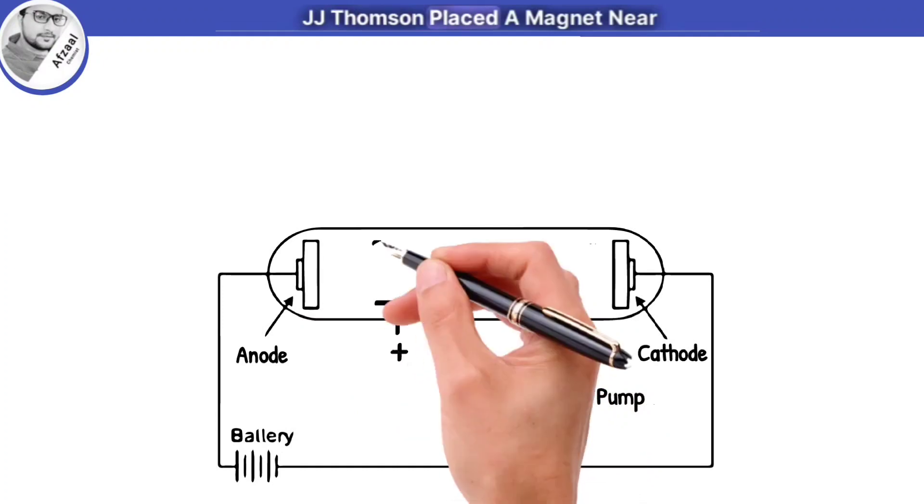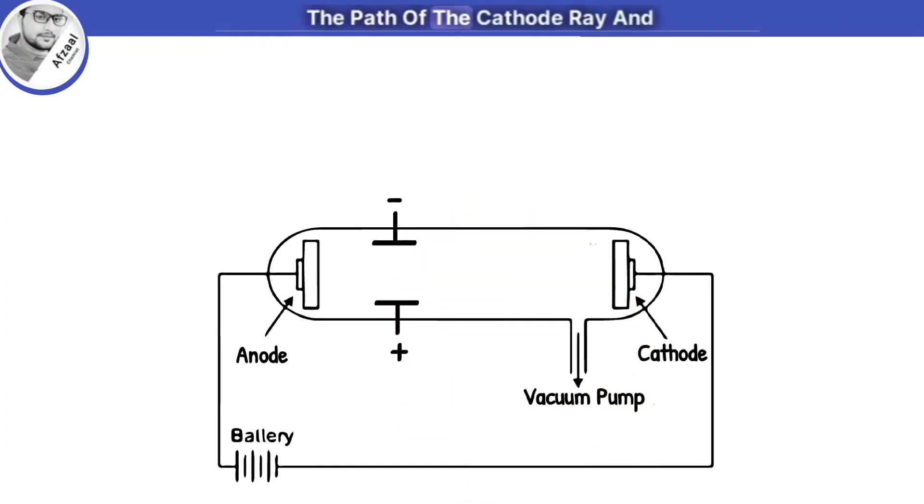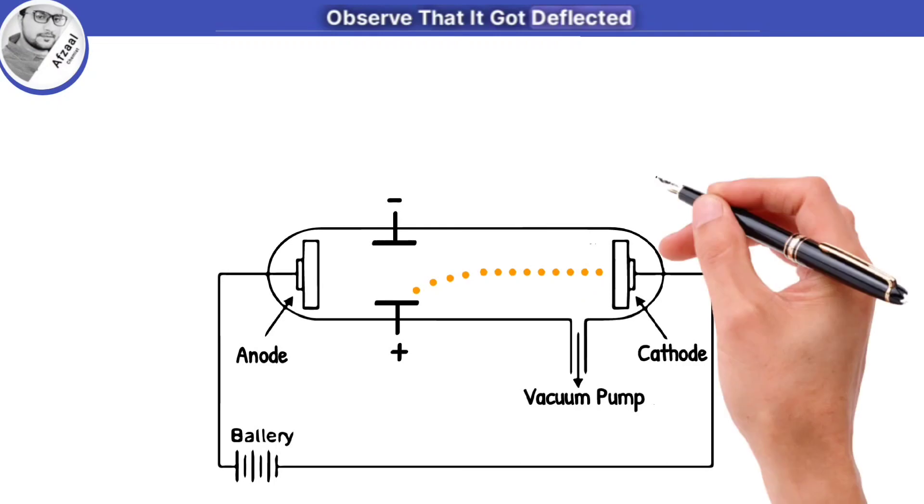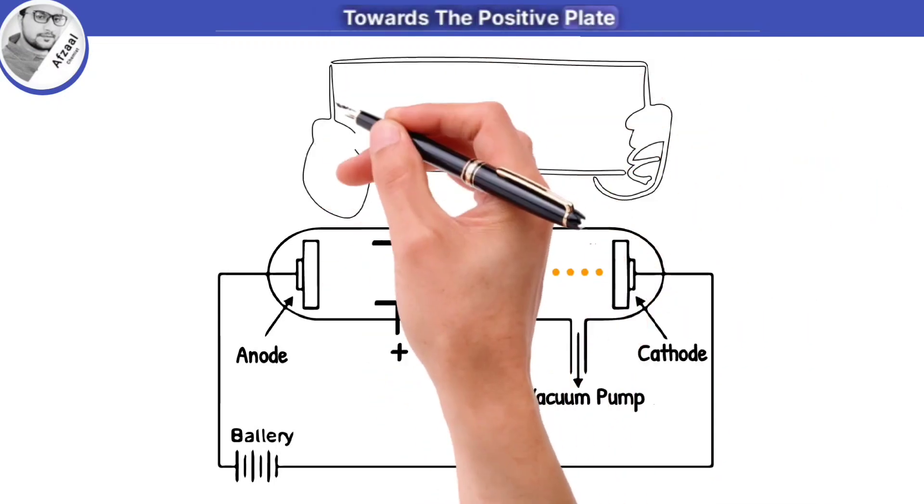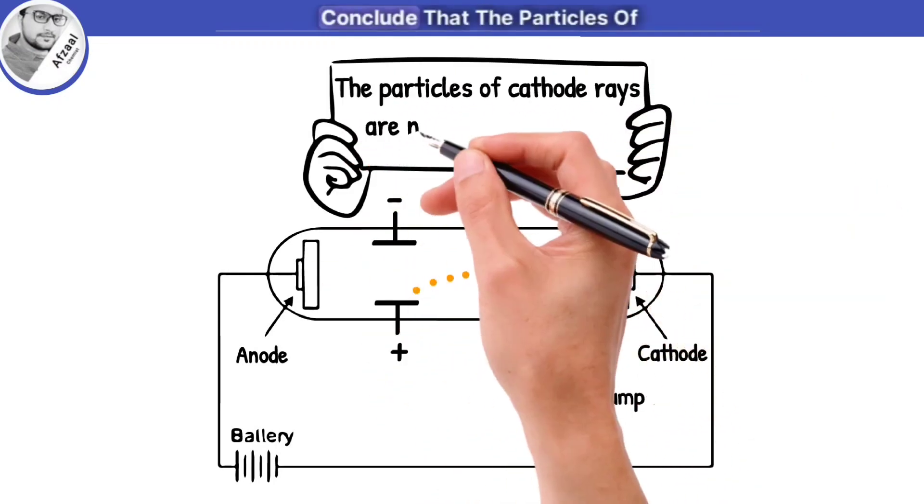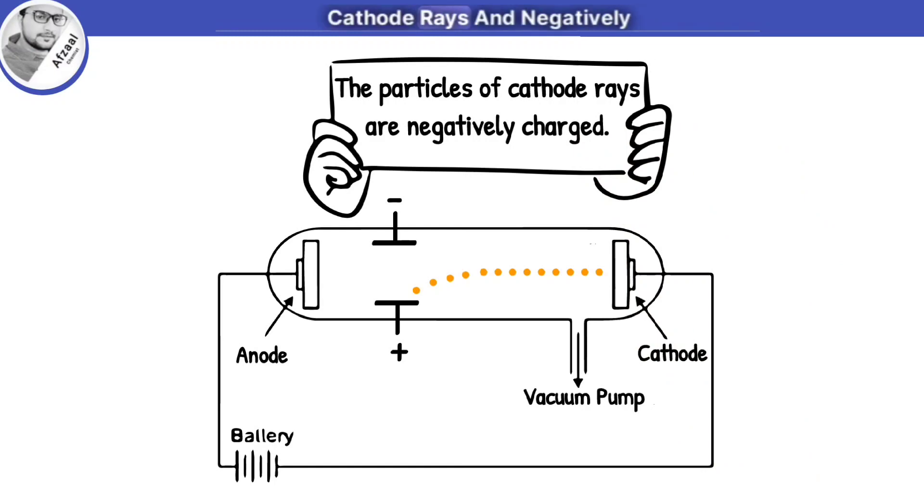J.J. Thomson placed a magnet near the path of the cathode ray and observed that it got deflected towards the positive plate. This observation led him to conclude that the particles of cathode rays are negatively charged.